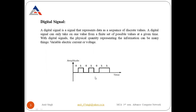The second term is digital signals. A digital signal is a signal that represents data as a sequence of discrete values. In the case of digital signals, a signal can only take on one value from a finite set of possible values at a given time. At any given time, a digital signal has only a single value.